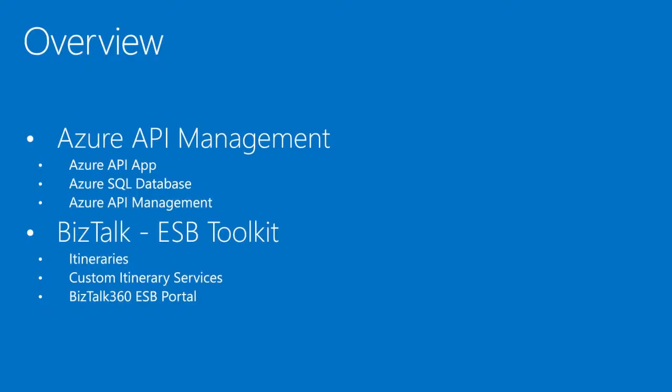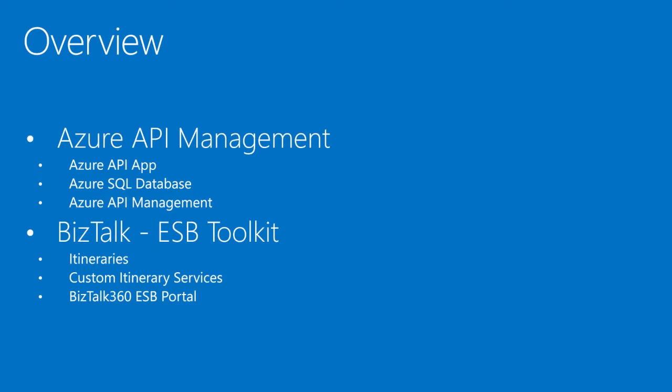What are we going to do today? We're going to talk about API management. Kent already showed you a lot about API management. What I'm going to do is create an Azure API app, store data in a SQL Azure database, and use API management in front of that. In the second part, I'm going to use BizTalk and ESB Toolkit to get the data from Azure and use itineraries to process the order information. When an error occurs, I'm going to use the BizTalk 360 ESB portal for the messages.